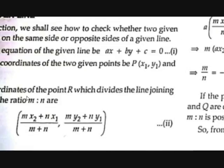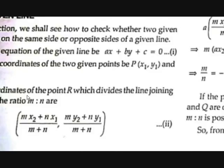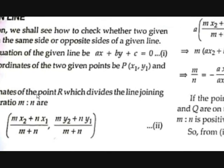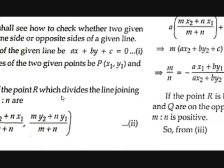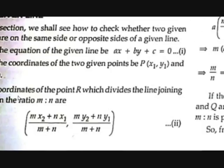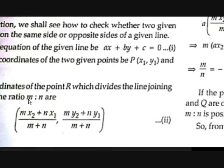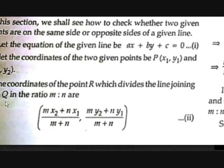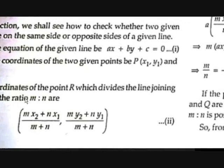This is the same concept we are going to discuss now, but with a small difference. In our case, there is a line passing through point R and another line joining P and Q, and those lines intersect each other with ratio M:N. The ratio of the parts divided in the line PQ is M:N.